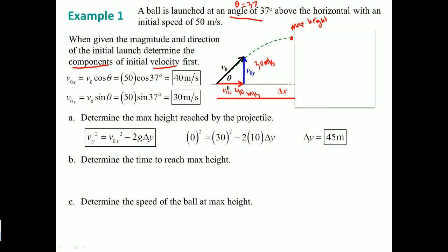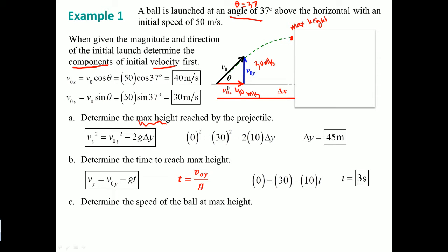Once you find the maximum height, that is the only way to compute the time. The time it takes the object to reach maximum height is found using the linear kinematic equation. Rearranging and solving for T: T = vy₀ / g, giving T equals 3 seconds.